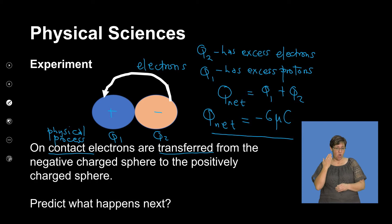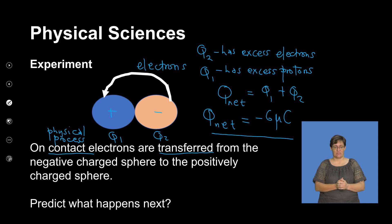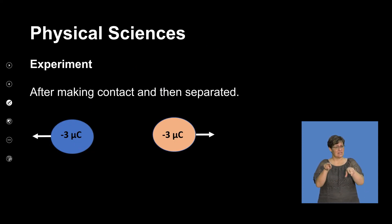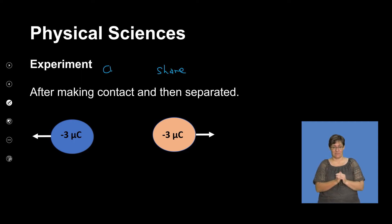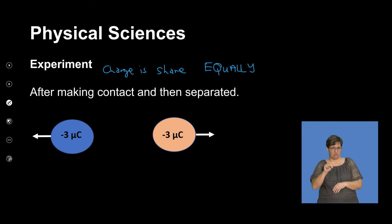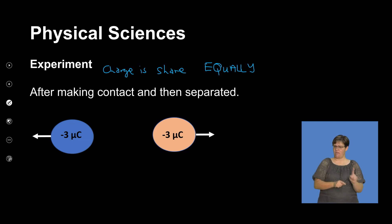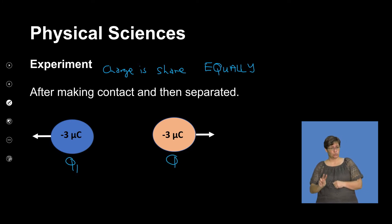Before they were brought into contact and after, the net charge must remain the same. After making contact, they share the excess charge equally — charge is shared equally. The new charge on Q1 is negative 3 microcoulombs, while the new charge on Q2 is also negative 3 microcoulombs.